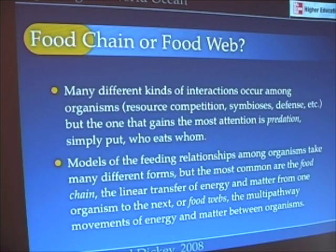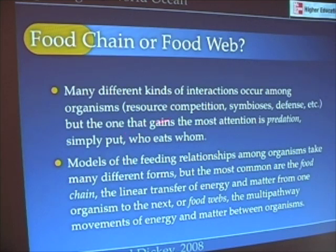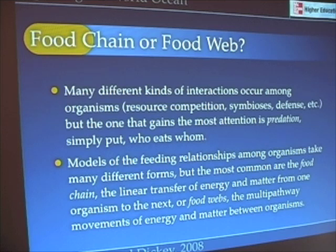Many different kinds of interactions occur between organisms themselves. Organisms might be competing for resources, just like two animals that are fighting for something to eat, or maybe you and a friend fighting for something to eat. That's called resource competition. Symbioses are when organisms kind of work together — examples like cleaner shrimp cleaning different organisms, or cleaner fishes cleaning the parasites off of hammerhead sharks. Those many other examples that we know from the sea are a type of symbiosis.